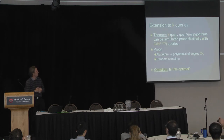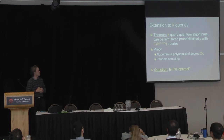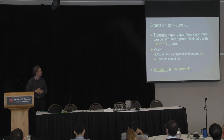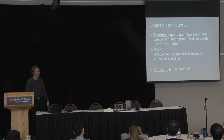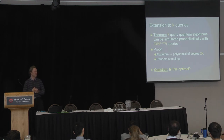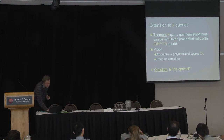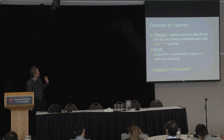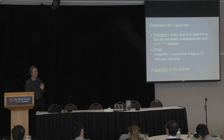We can generalize this to more than one query. If there is a quantum algorithm that uses k queries, we can simulate it probabilistically with a number of queries that is input size to the power 1 minus 1 over 2k. The proof is conceptually the same: k queries means we represent amplitudes by polynomials of degree k and measurement probabilities by polynomials of degree 2k, and we use random sampling to estimate a polynomial of degree 2k. The question to which we don't know the answer is whether this is optimal — we think that it is.